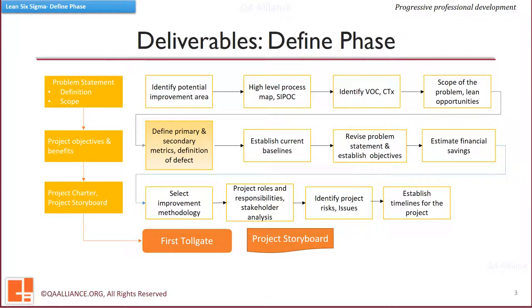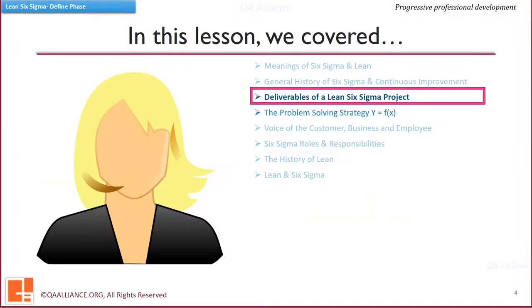By the end of the Define Phase, we should have a project charter and storyboard detailing out the business case, problem statement and goal statement, project scope, constraints and assumptions, team roles and responsibilities, important stakeholders, and a preliminary project plan with risk analysis and schedules. Another important activity is to identify the primary and secondary metrics that will be monitored during the project and create their initial baselines. If required, the project charter is revisited and updated, financial saving estimates are calculated, and the improvement methodology to be used is also selected during the Define Phase.